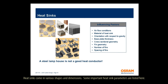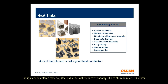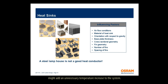Heat sinks come in various shapes and dimensions. Some important heat sink parameters are listed here. Web pages of heat sink suppliers offer tools to optimize the heat sink for an application. Though a popular material, steel has a thermal conductivity of only 10% of aluminum or 30% of iron. Thus, steel of more than a few millimeters thickness within the thermal path might add an unnecessary temperature increase to the system.